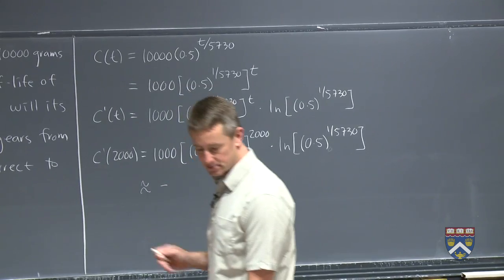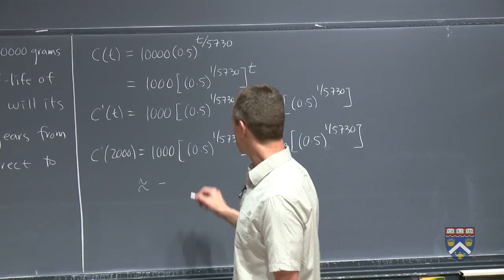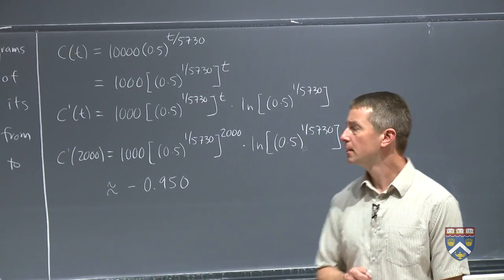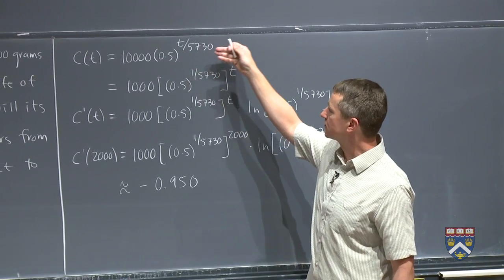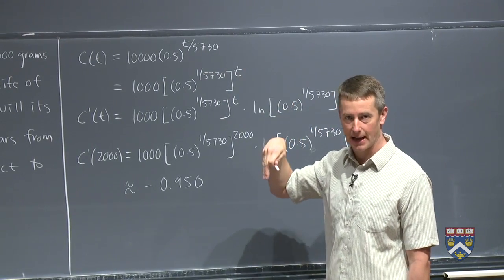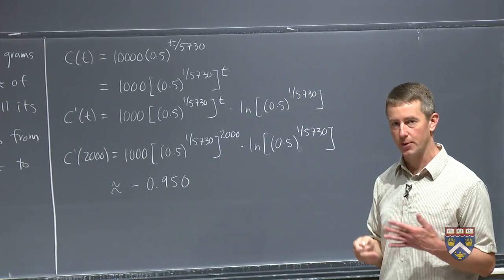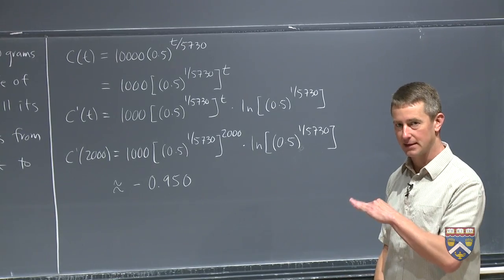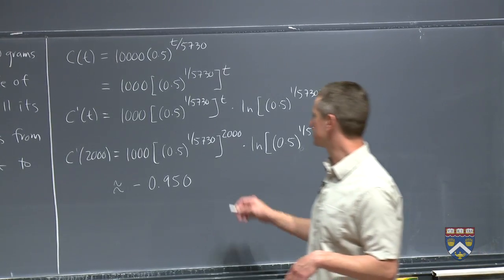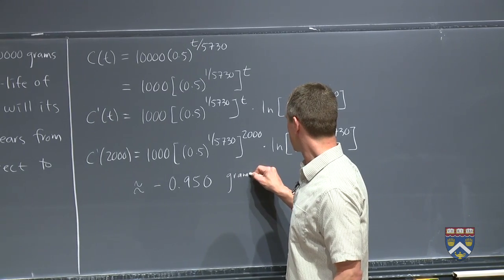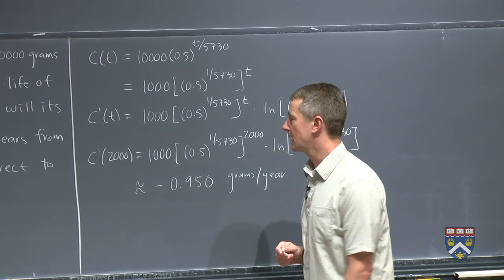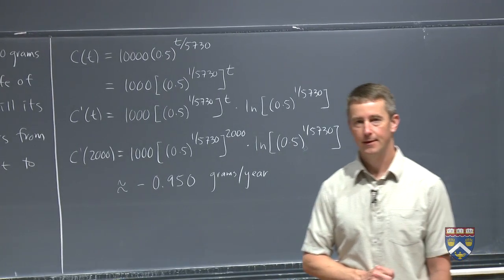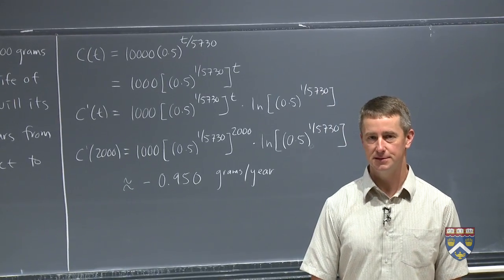And so this ends up being, correct to three decimal places, negative 0.950. And what should the units on this be? The original function was grams as a function of time. The derivative is a slope. And remember, slope we always get by taking change in y over change in x. So in this case, the units on the vertical were grams, and on the horizontal were years. So we've got grams per year. So that's how fast this is decaying exponentially 2,000 years from now. And we have a check your understanding, or you'll get the chance to practice this on your own right now.